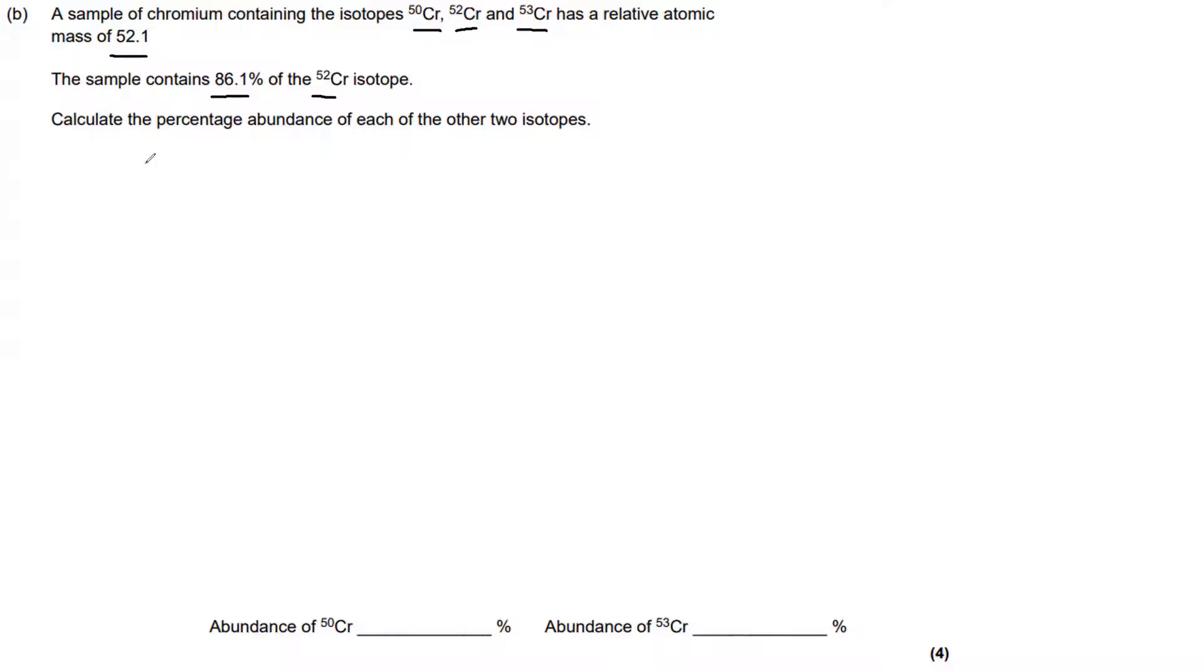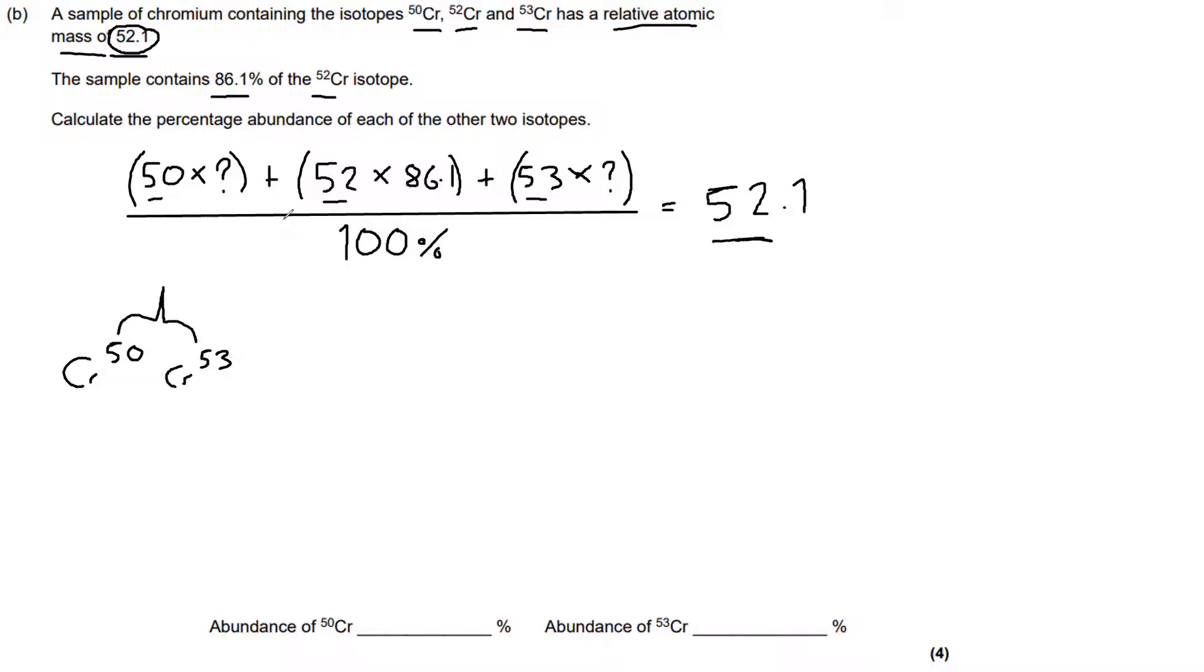Calculate the abundance of the other two. Alright, let's set this equation out. So if we know total abundance is 100% and we know that 52 is 86.1, then that means that 50 and 53 are equal to 100 minus 86.1. So they are 13.9% is the sum of the abundance of chromium-50 and 53.